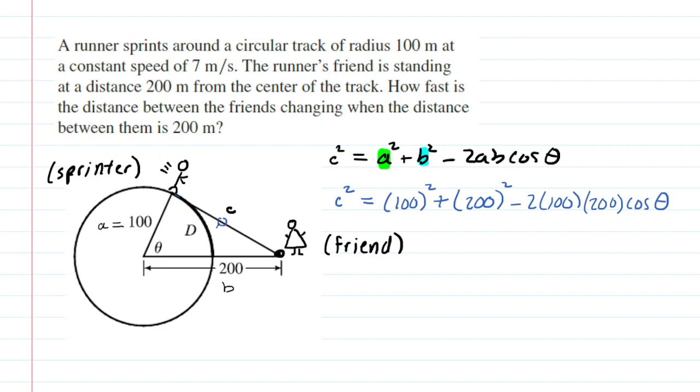But now if the runner moves closer, so say the runner reaches right here, then the distance between the runner and the friend has shortened. So c would now be a smaller value. And the angle would also shrink as well. So c varies and the angle varies.